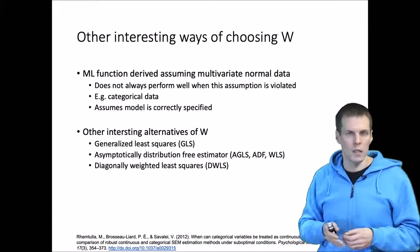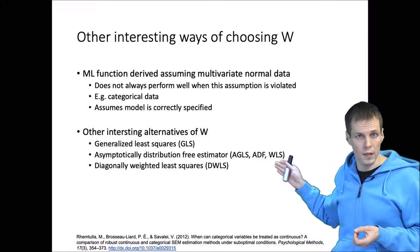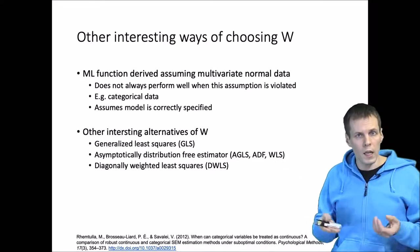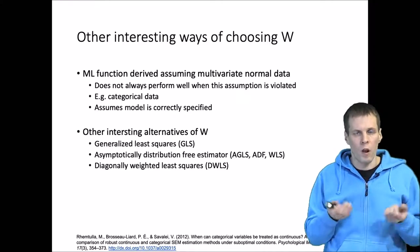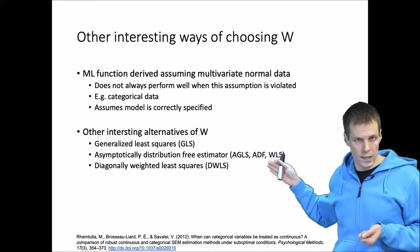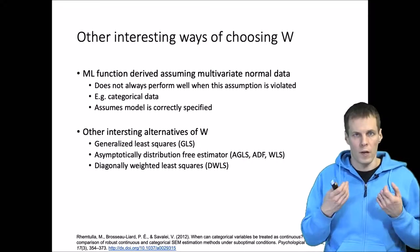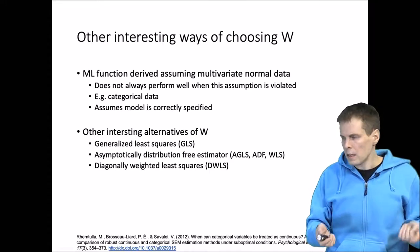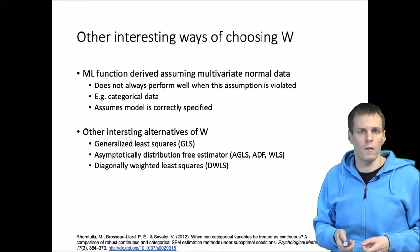There is also diagonally weighted least squares, which is a simplification of the asymptotically distribution-free estimator. These two estimators are useful when dealing with non-normal datasets, and particularly if you have large models with categorical variables they would almost always be estimated using one of these two techniques, because maximum likelihood techniques for categorical variables are computationally very demanding.